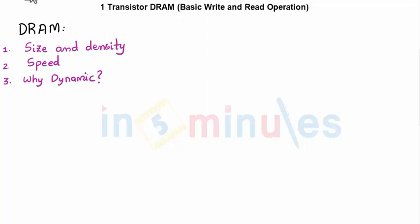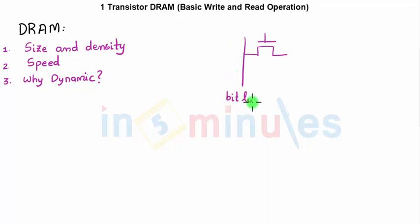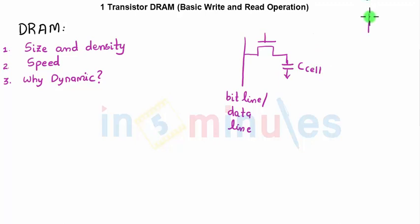We start with the structure of our DRAM, which is very simple compared to our SRAM. It comprises one pass transistor, which is an NMOS transistor, with one of its terminals connected to the bit line. Some authors call it the data line as well. The other terminal is connected to a capacitor for one particular cell — that's why we call it C_cell — and this is going to be the word line. This is a one-transistor DRAM circuit.